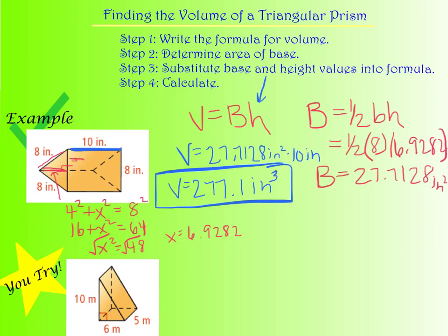So that's your volume for that problem. We had to do a little bit more here because we had to find the area of this triangular base, which means we have to use one-half base times height. Our base we knew was eight, but our height we had to calculate by doing Pythagorean theorem. So it was a little bit more in-depth. You go ahead and you do the you-try here.